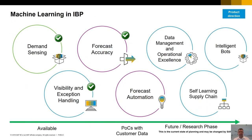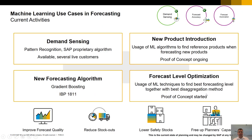Let's take a look at some of those and how they are going to affect us. In our available area right now we have demand planning and demand sensing, visibility and exception handling, and forecast accuracy. When we're starting to do POCs with customers and using their data, we're going into more advanced areas around forecast automation, data management and operational excellence, and a really interesting topic around this idea of a self-learning supply chain.